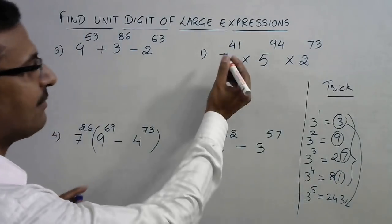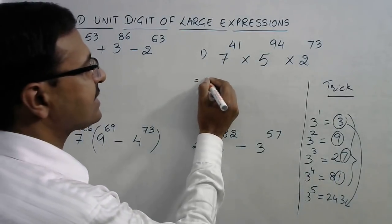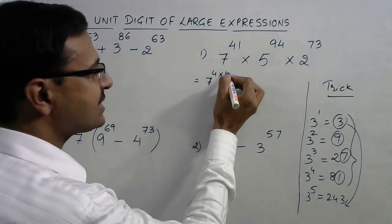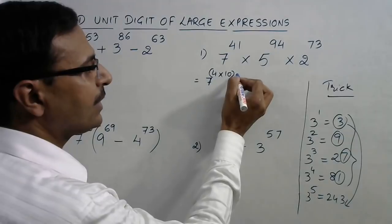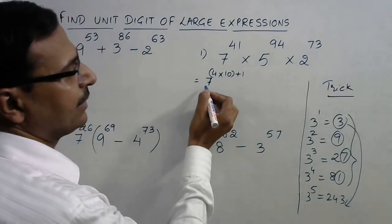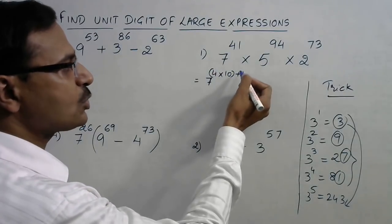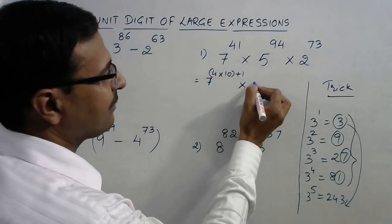Here, we have 7 raised to power 41. This is actually 7 raised to power 4 times 10, this is 40, so this will get eliminated and you have only plus 1. So, this is 41. We will eliminate this and this will be 7 raised to power 1 only.